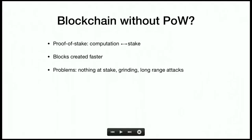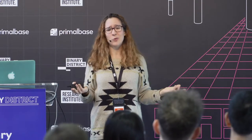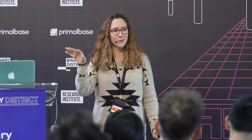But there are some problems. One is called nothing-at-stake. If you can create blocks instantaneously without consuming energy or money, imagine there's a fork — every miner could keep creating blocks on both forks because they don't lose money by doing so. Miners are not fully incentivized to reach consensus on one chain because they'll just try to create blocks on every chain possible since they don't know which will win.